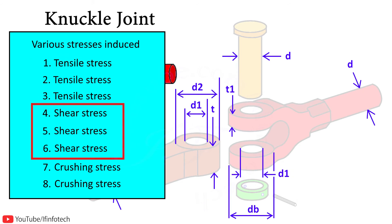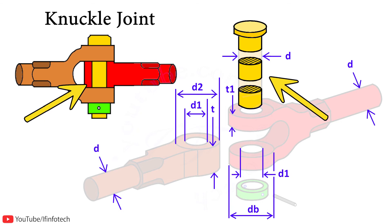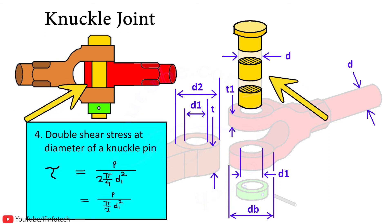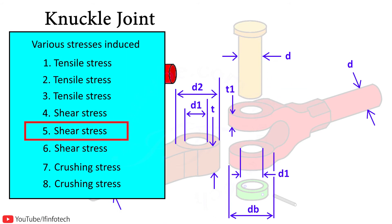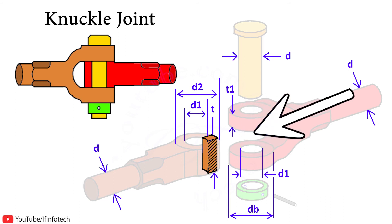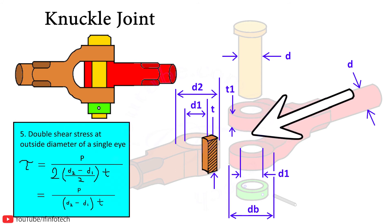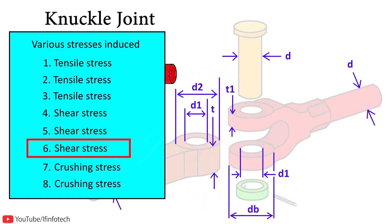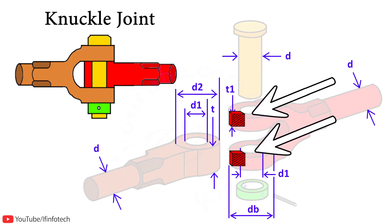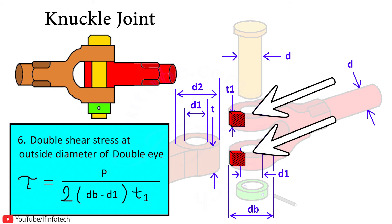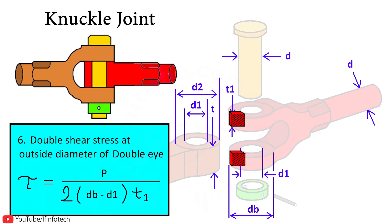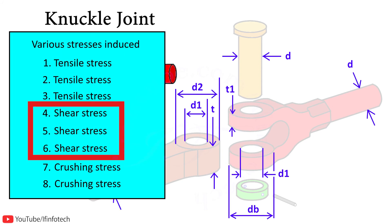The next stress is shear stress. Failure occurs due to double shear stress at the diameter of the knuckle pin: load P divided by π/2 × d1². The next failure is double shear stress at the outside diameter of the single eye: P divided by (d2 − d1) × t. The next failure is shear stress at the outside diameter of the double eye: P divided by 2 × (db − d1) × t1.